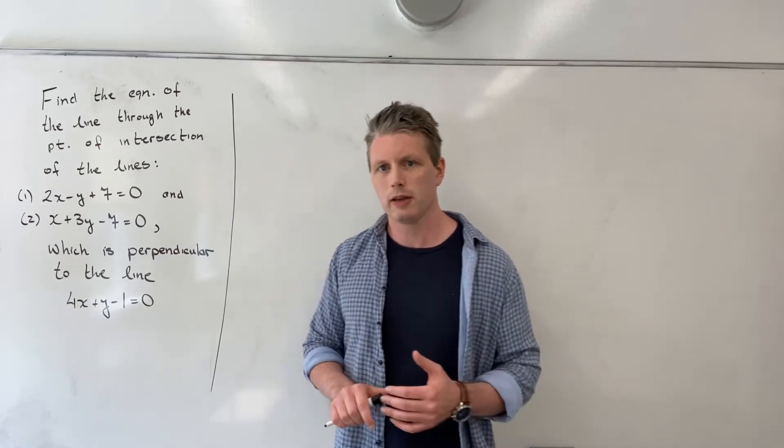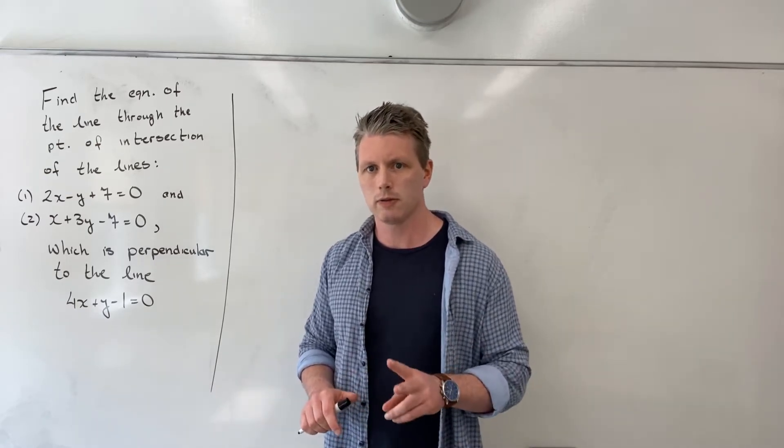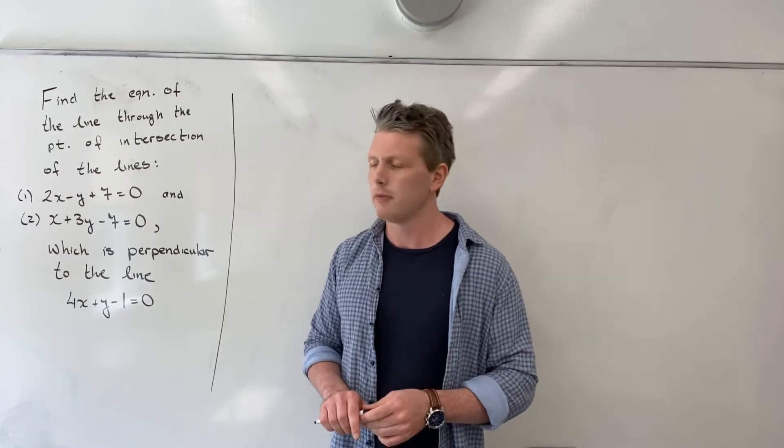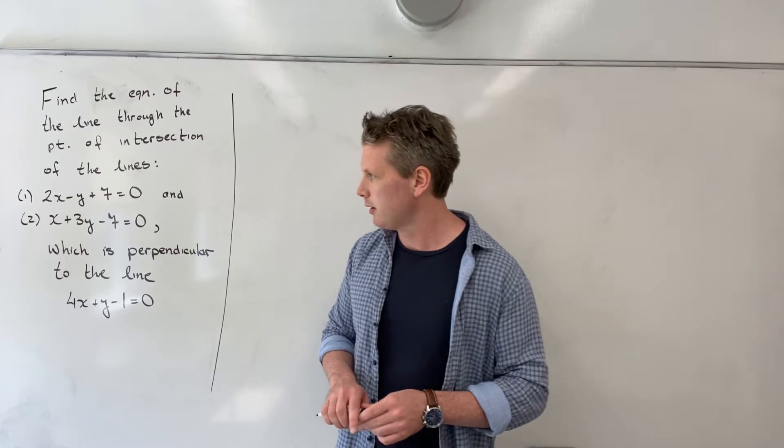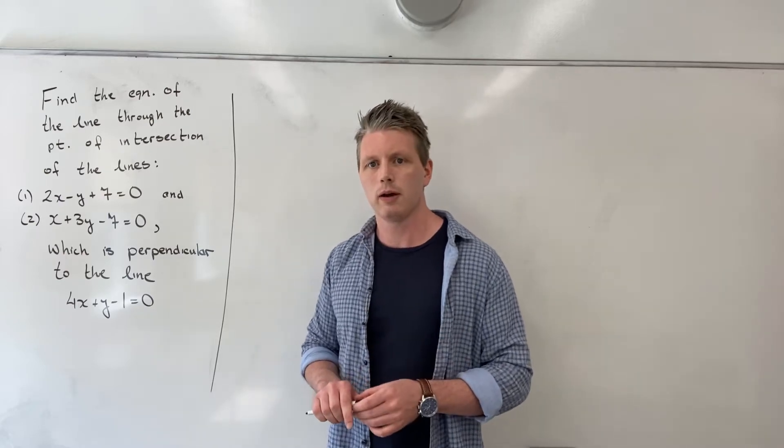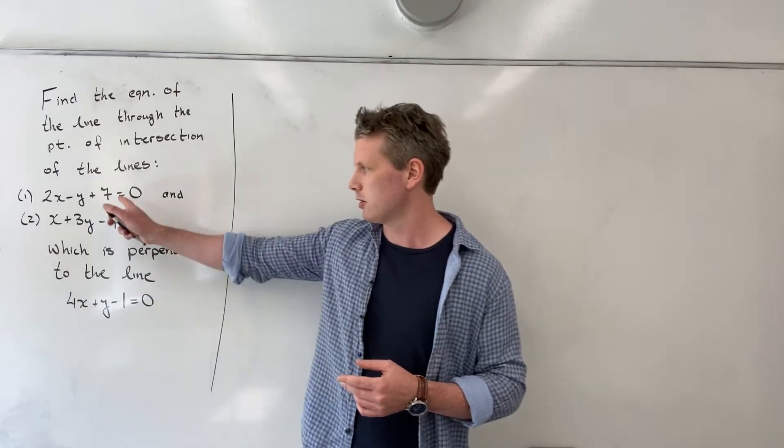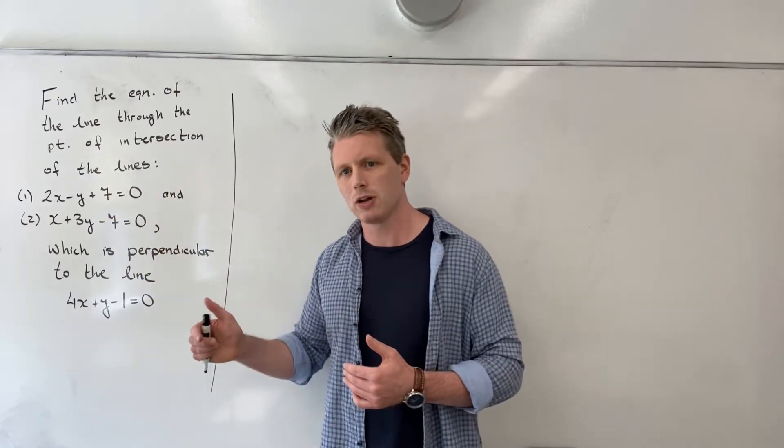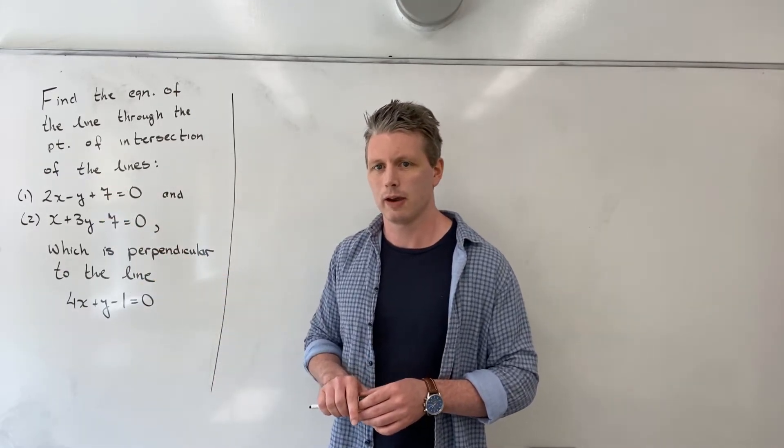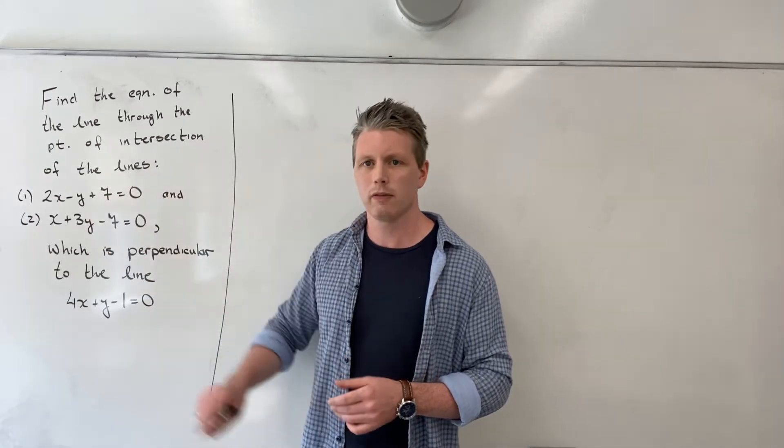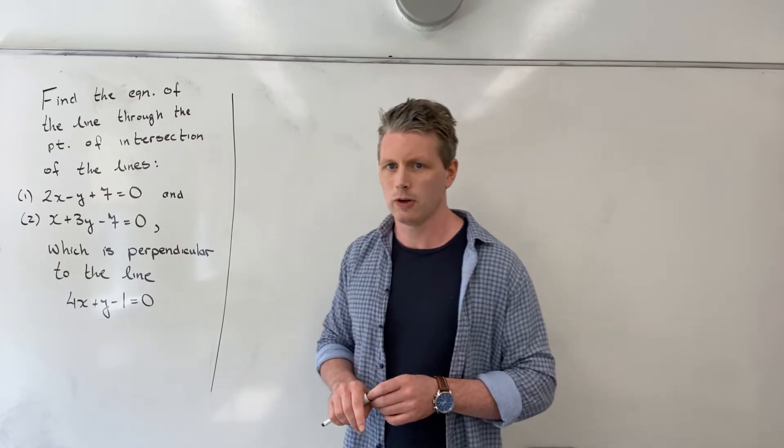All right, so in order to find the equation of a line, we need two things: we need a point on that line and we need the slope of the line. In this problem, we are not given directly a point on that line. However, we are told that the point of intersection of these two lines lies on the line that we want to find. So the first thing we're going to do is find the point of intersection of these two lines using what we call simultaneous equations.